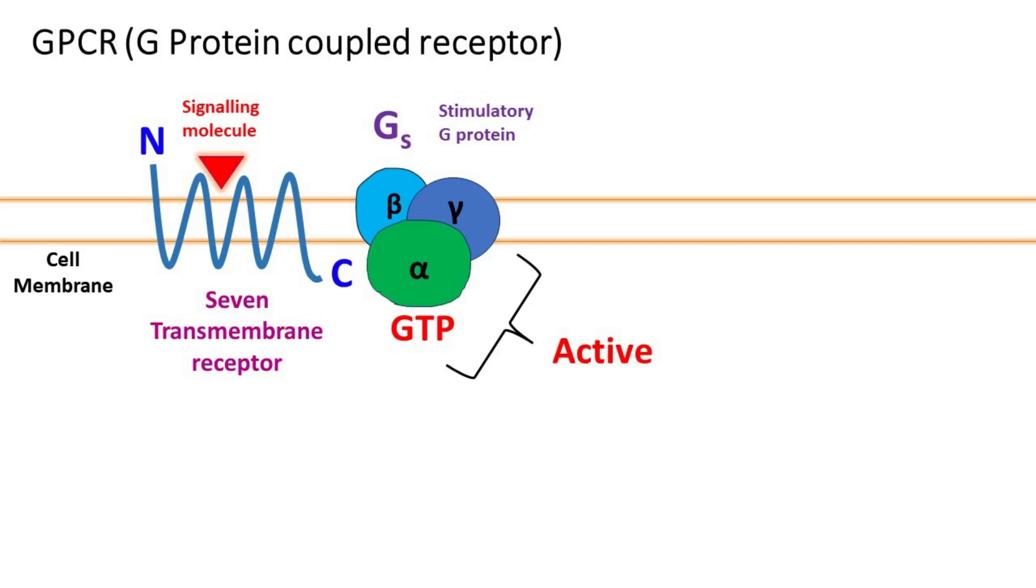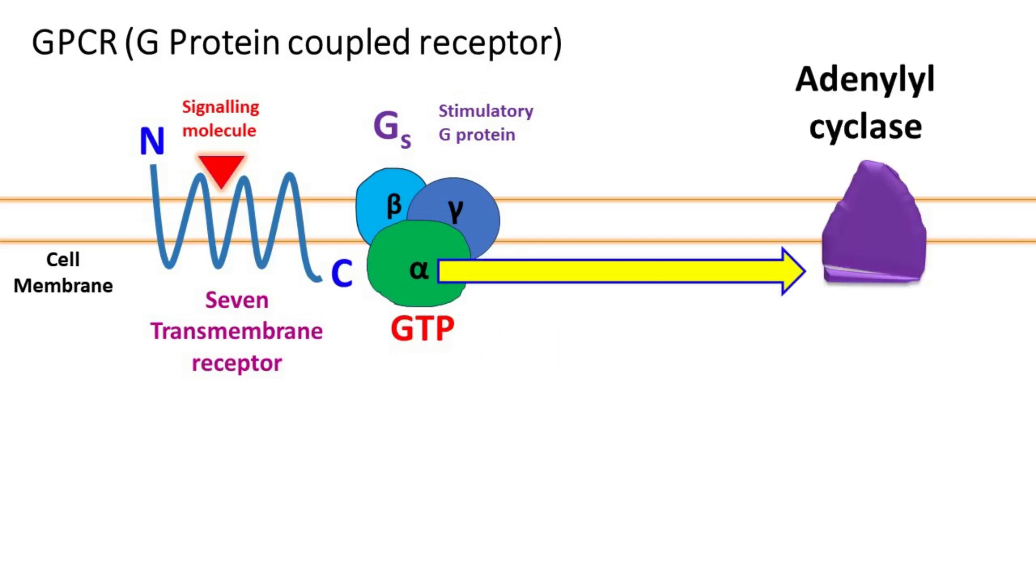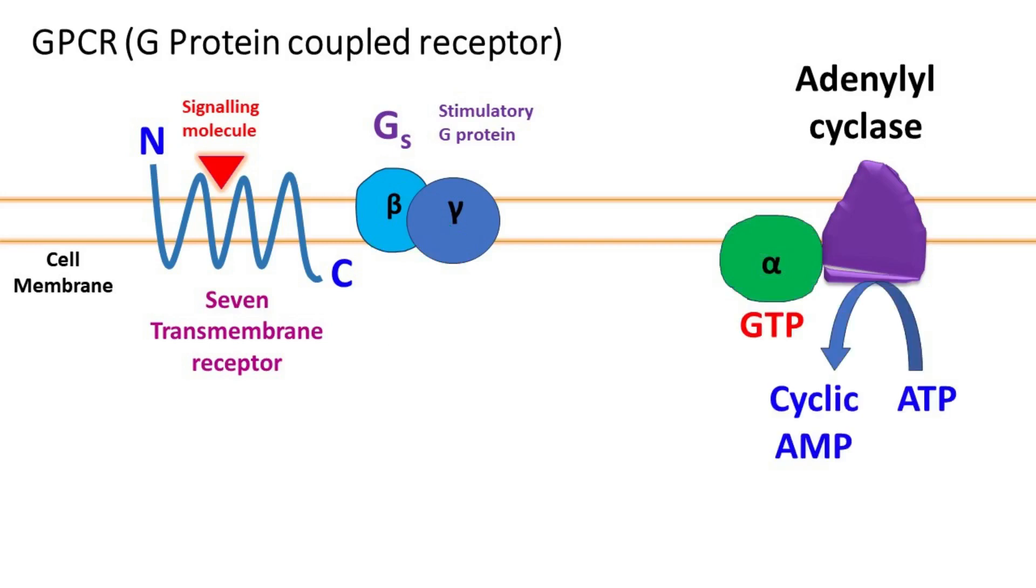The activated alpha subunit moves to the adenylyl cyclase enzyme and activates it. The adenylyl cyclase enzyme catalyzes the formation of cAMP from ATP.